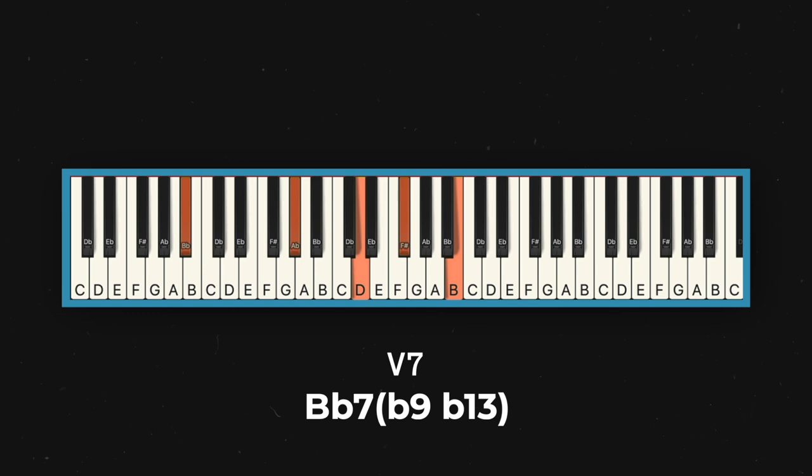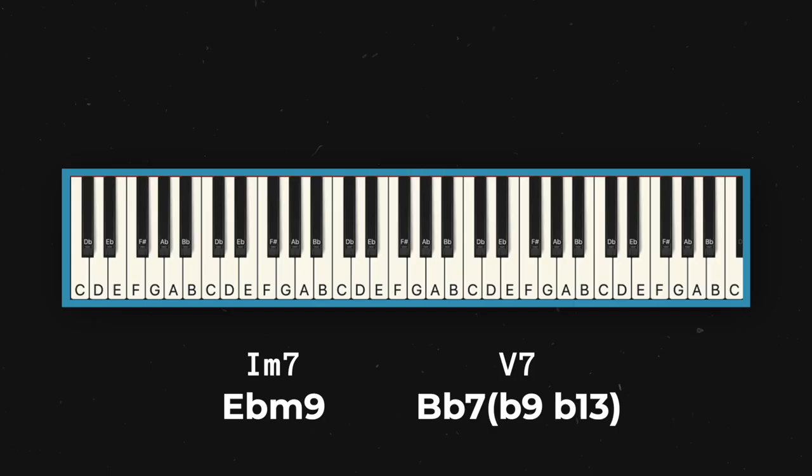Finally, we finish off the bridge with a V7 chord — that's a Bb7, b9, b13. It's one of my favorite chords in the whole song, because it's the first time we hear a true 5 chord that's not a secondary dominant. It's super climactic, tons of tension, and resolves beautifully back to the tonic.